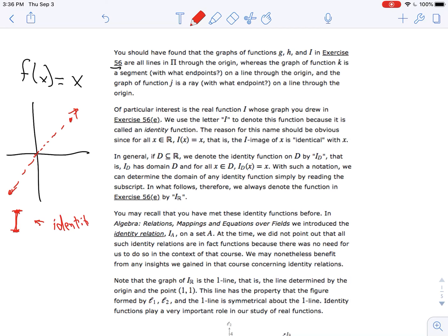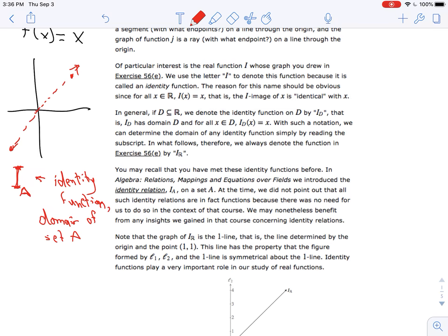Because again, this is an identity function, so it makes sense to call it I. And then of course, if I say a little subscript a, like so, that implies that this has a domain of set a, whatever set a happens to be. Probably over reals.